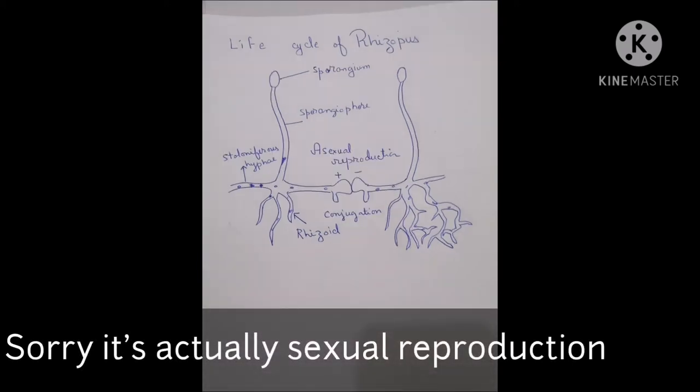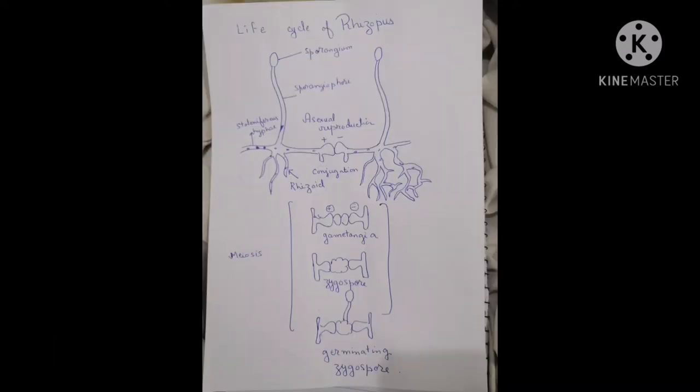Zygomycota are also known as conjugating fungi because in this type of fungi, positive and negative strains meet to form a new germinating hyphae. It's also known as sexual reproduction of fungi. Meiosis occurs during conjugation.